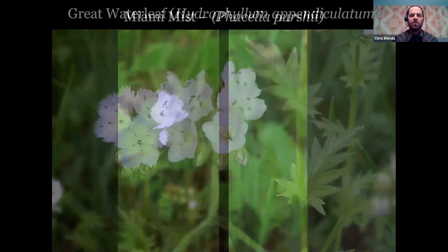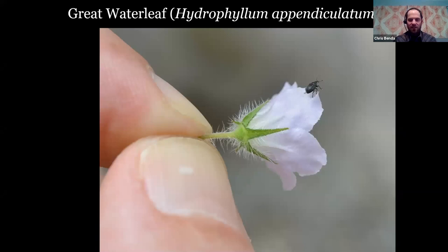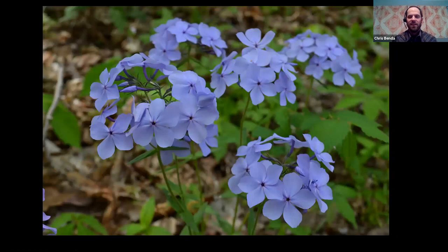Waterleaf — our most common example where I'm at is Hydrophyllum appendiculatum. The 'appendiculatum' refers to this appendage: if you look at the flower up close, you can see five sepals extending up toward the flower petal, but in between those is another little short green spur pointing opposite from the flower, straight down — that's the appendage. If you see that, you know you're looking at Hydrophyllum appendiculatum versus other Hydrophyllum species. You can see a little weevil hanging out on the flower there.